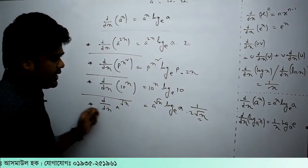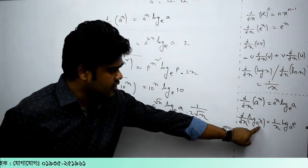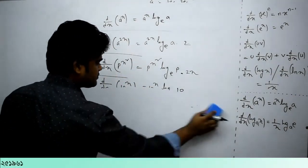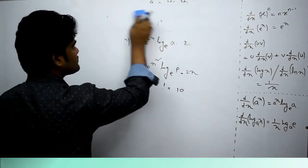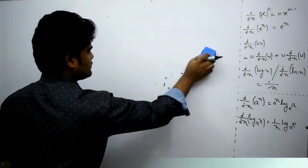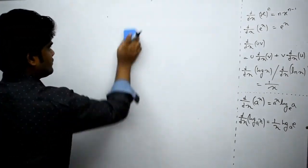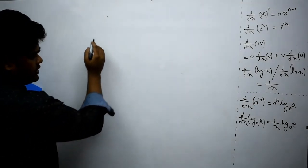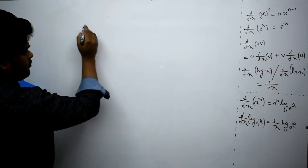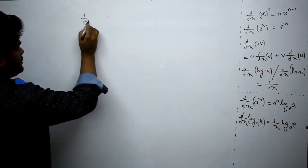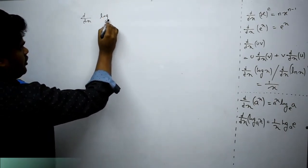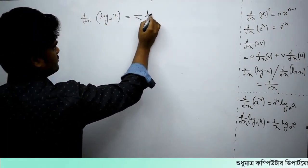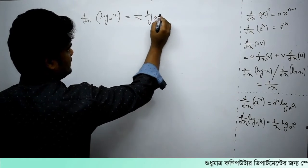So we can see log a to the power x. So we will be able to find out the difference between d by dx of log a to x. This is the difference between d by dx log a to e.